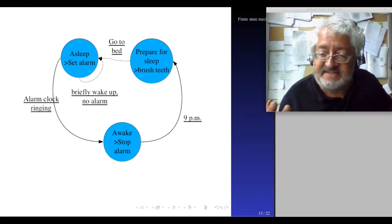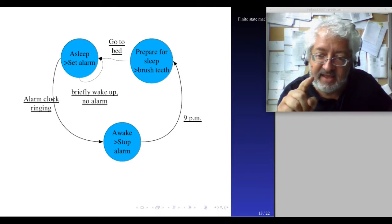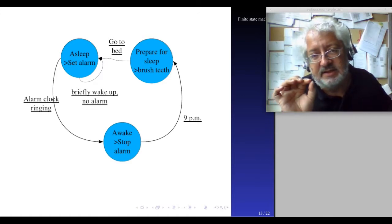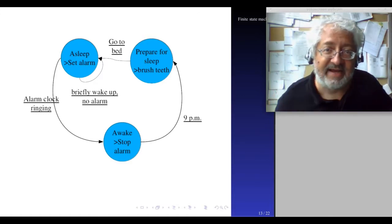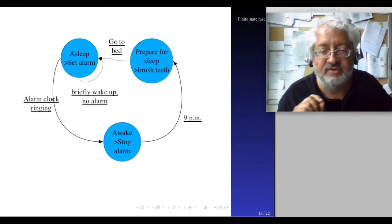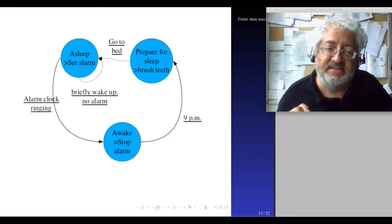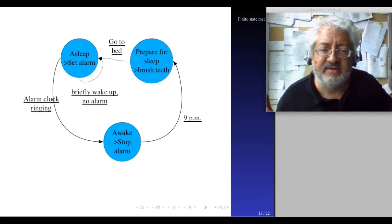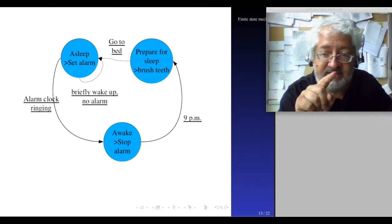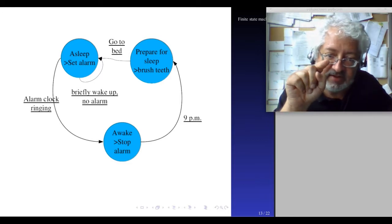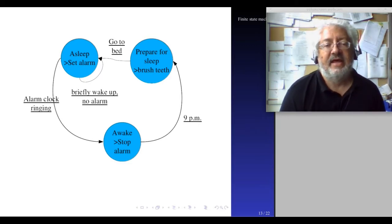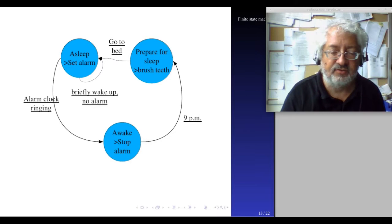I can also have states where the following state is the same state. For example, I can be asleep, and then in the night I wake up before my alarm has rung, because if the alarm rings, I'm going to the state of being awake. But in the night it can happen that I briefly wake up, I'm not fully awake, my alarm has not rung. What happens is that I turn around in my bed and fall asleep again. Then I have a state that leads to the following state, which is itself. And this is what you see here, this little arrow at asleep that just turns around and goes back to asleep.